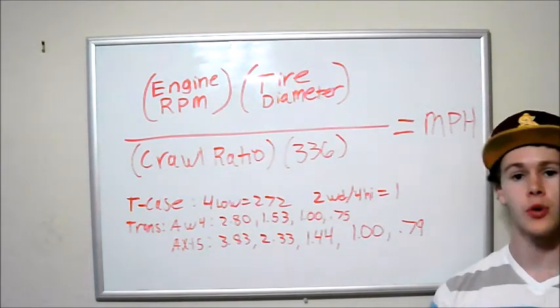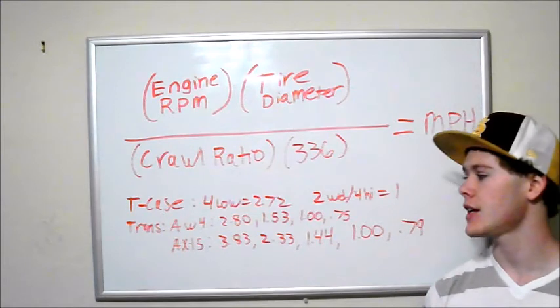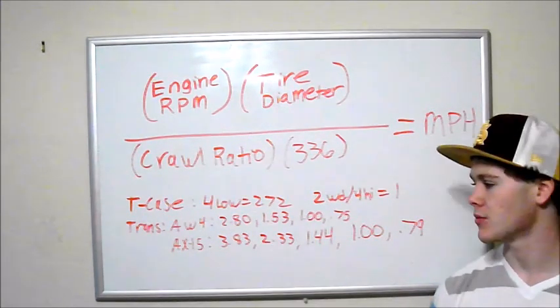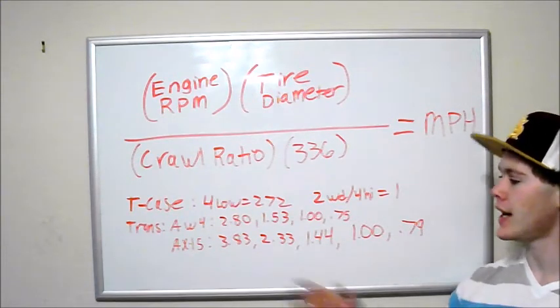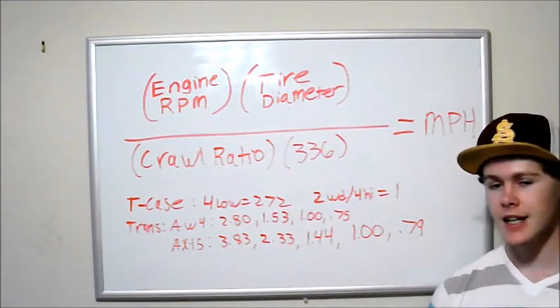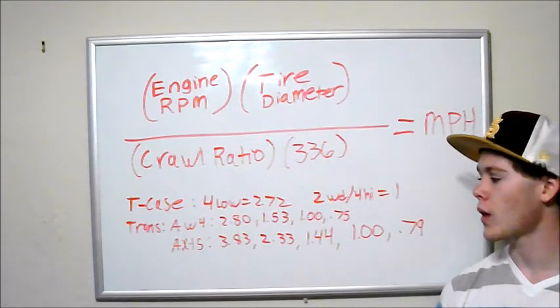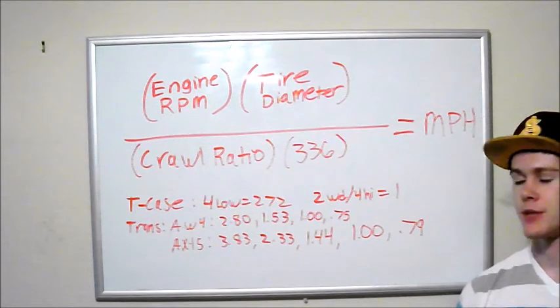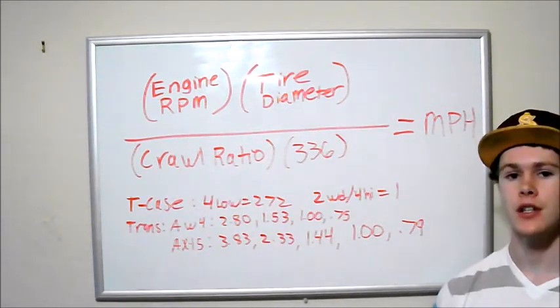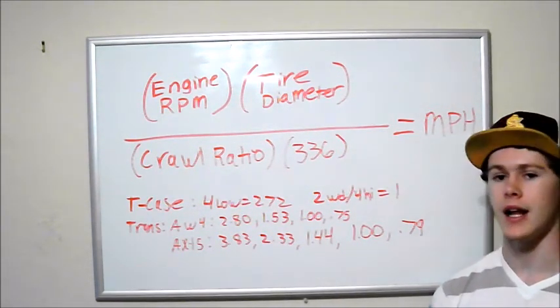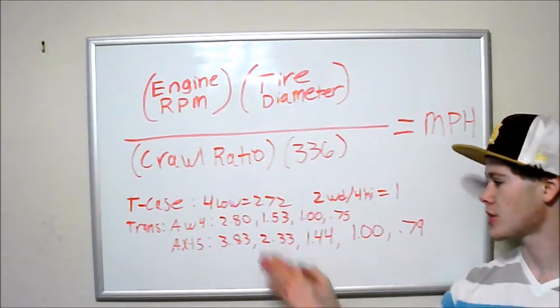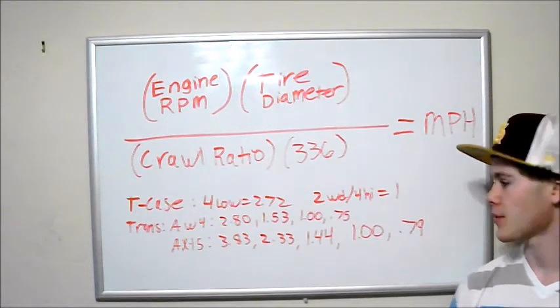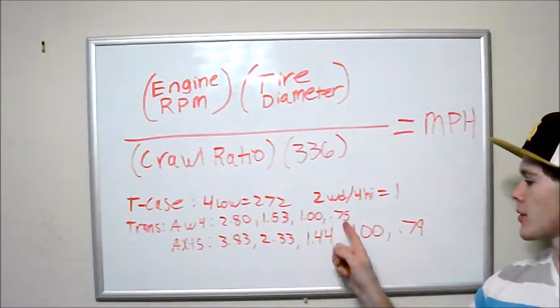If we're in second gear, let's say we're driving an automatic, so we have that AW4, our first gear has a ratio of 2.80. If we have second gear though, our ratio is 1.53. Third gear is 1.00, and fourth gear is 0.75. So you just put this number in instead of the 2.80 for first gear, you just substitute whichever gear you're in. So first gear is 2.80, second gear is 1.53, third gear is 1.0, fourth gear is 0.75.